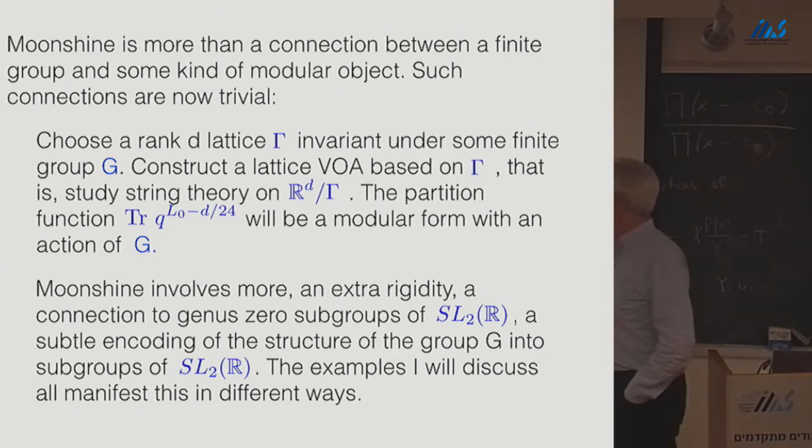So what really deserves the name moonshine is something where there's some extra rigidity. But rigidity here is a mathematical rigidity usually connected to what are called genus zero subgroups, either of the modular group or sometimes of SL2R. And really means that there's some subtle encoding of the structure of the group that's acting in terms of subgroups of SL2R. And it's a structure which is manifest in slightly different ways in all the examples.